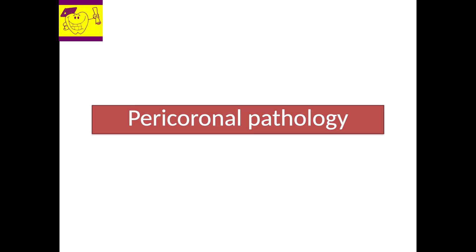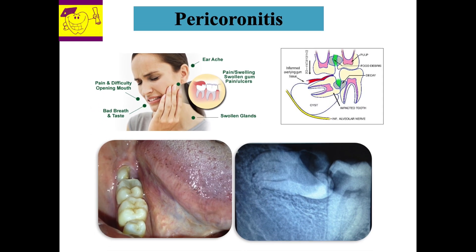Inflammation of the pericoronal tissue surrounding an erupting tooth is called pericoronitis. The term is used synonymously with an erupting upper or lower third molar, usually occurring between 17 to 30 years of age. The patient will have an inflamed pericoronal flap with food accumulation, suppuration beneath the flap, regional lymphadenitis, trismus, or pus accumulation leading to an extraoral swelling called a pericoronal abscess. Investigations include radiographs to assess the position of the erupting tooth. The patient should be prescribed analgesics and antibiotics. If the tooth can erupt into occlusion, an operculectomy should be done; if the tooth is impacted, it should be surgically extracted.